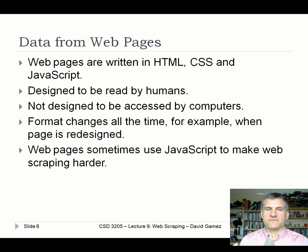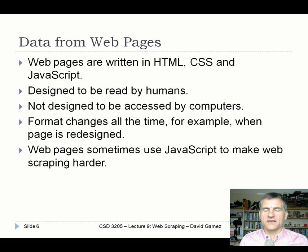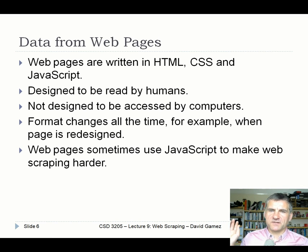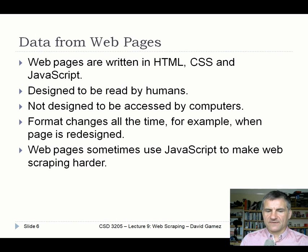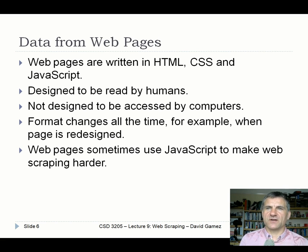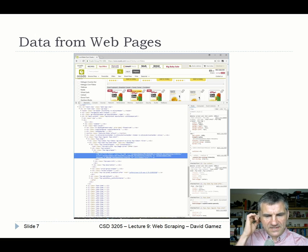Another way you can get data on the web is by scraping it from web pages. Web pages are written in HTML, CSS, and JavaScript. The key thing is that they're designed to be read by humans, not accessed by computers. Because they're designed to look pretty and are often redesigned, the format will change all the time - designers might change class names, and the code you wrote to pull data one day will become useless the next. Sometimes websites don't like you pulling their data, and some are very heavy on JavaScript, which makes scraping harder.